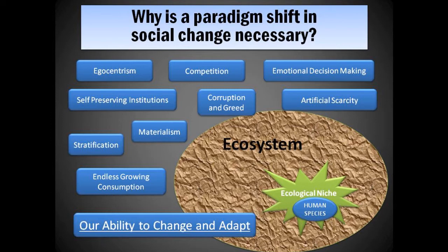Never in human history has there been such a great turning point approaching that could impact not only every future human generation to come, but the ability for a species to persist. In the end, our inability to change and adapt will result in a continuing shrinkage of the human ecological niche, as well as the destruction of the Earth's natural ecosystem, which will likely end in a catastrophic mass extinction that could include ourselves.